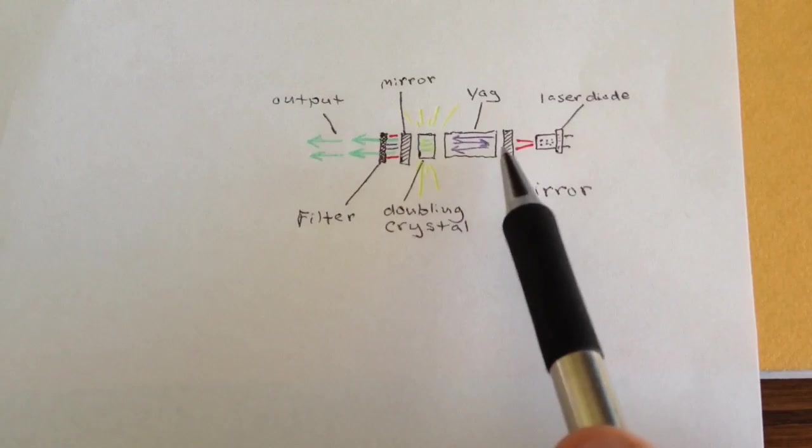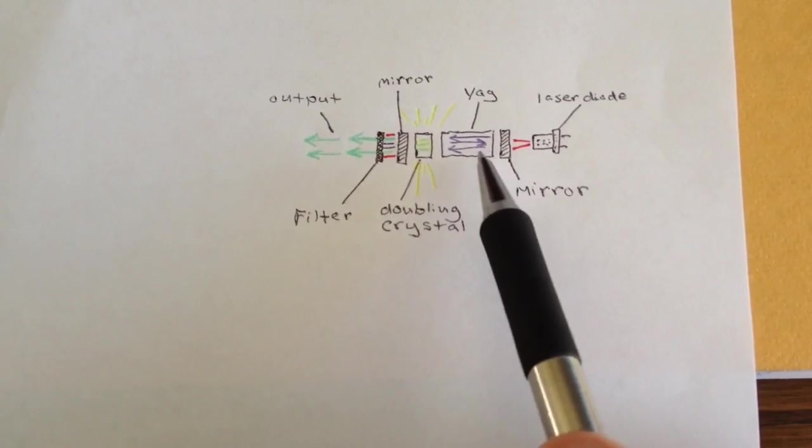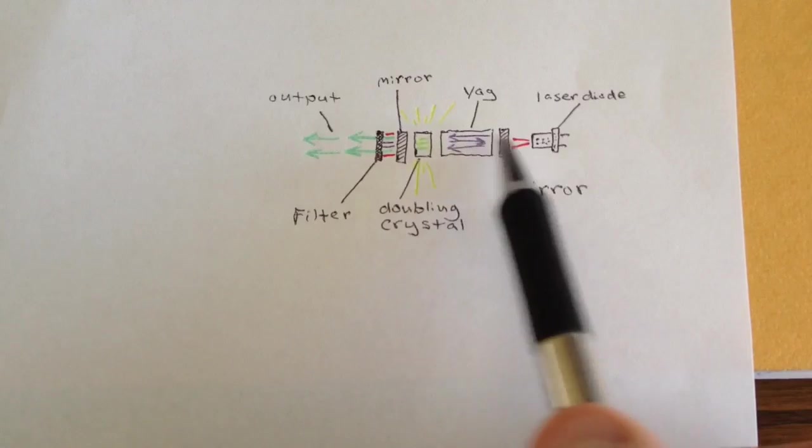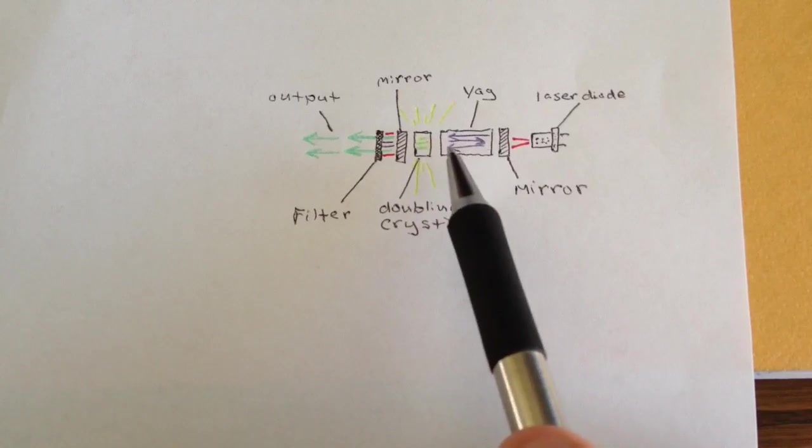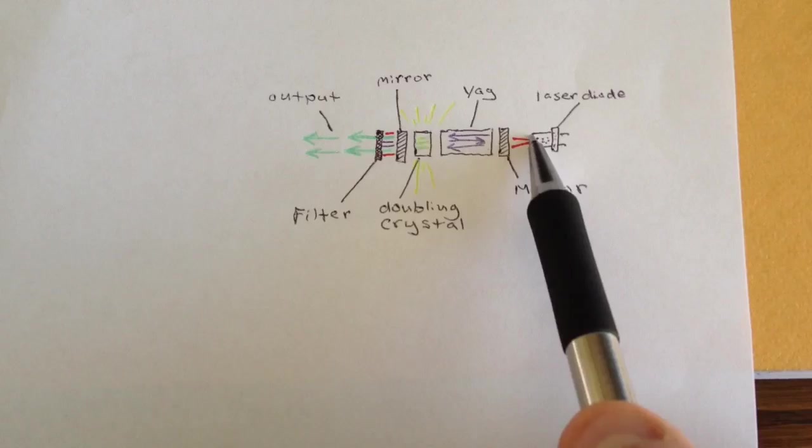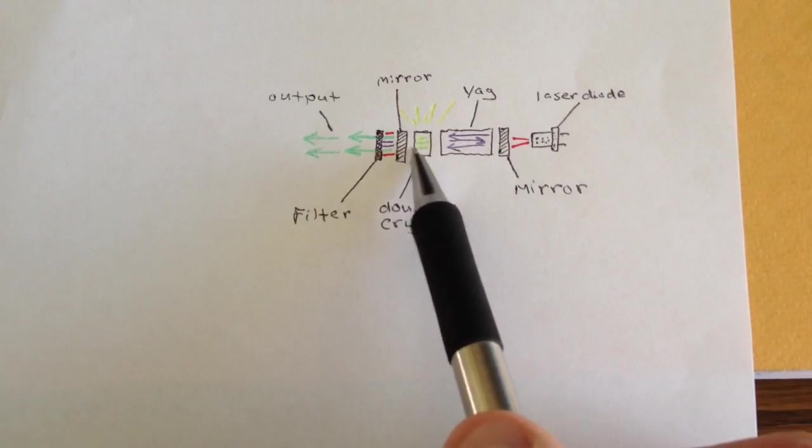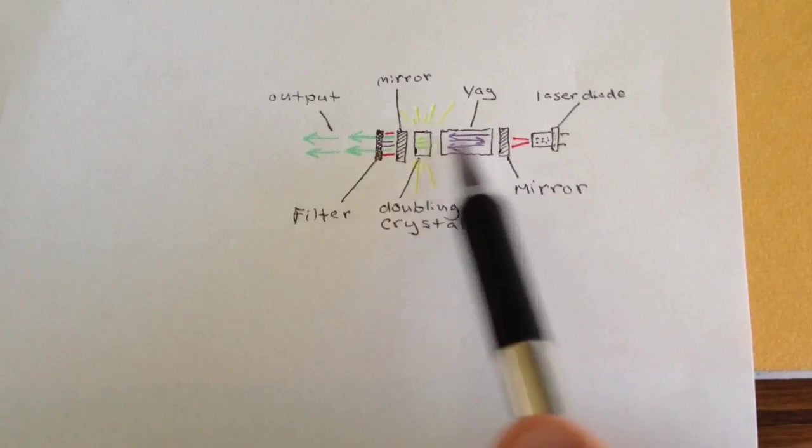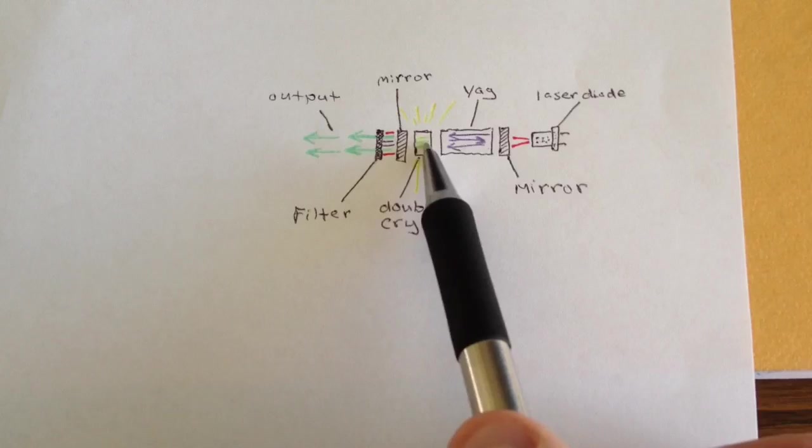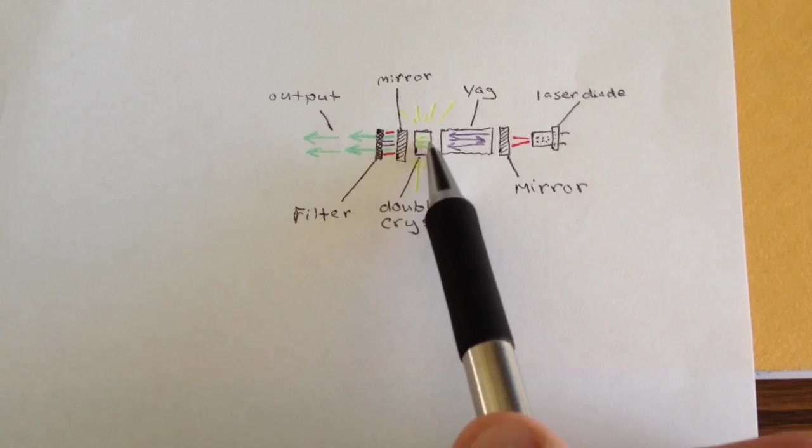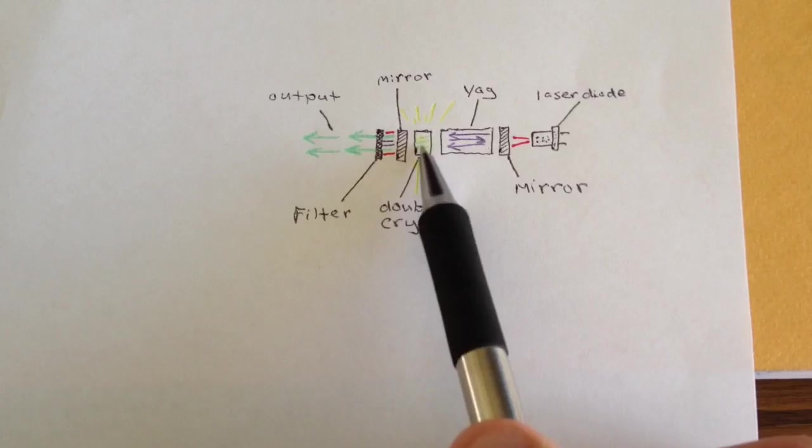And these mirrors are necessary on the end, because without them you won't have feedback for this crystal, and it won't be able to lase. So you're pumping this crystal with the output from the diode laser. The 1064 is trapped between these two mirrors, and also you've got the 532 here, where it's converting the 1064 to visible light in the green.